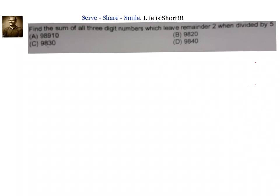We can solve this problem in two ways. In the first method, we will find out which option is correct without actually finding the sum, and we will not be using any formulas. In the second method, we will actually apply the formulas and find out which option the sum equals. Now let us go to the first method.